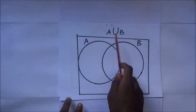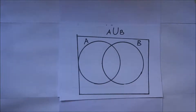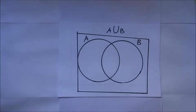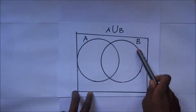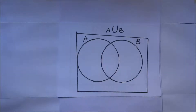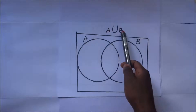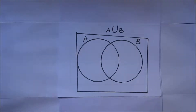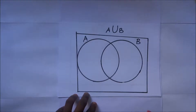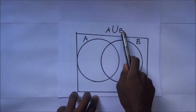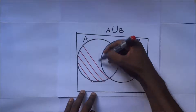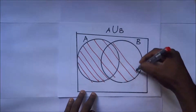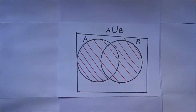Now we have A union B. Union simply means the unity of the elements in both A and B. So this is the whole of set A and this is the whole of set B. Where these two are united, their union is a combination of elements in set A and elements in set B. So when shading A union B, you combine all elements in set A and all elements in set B — that is A union B.